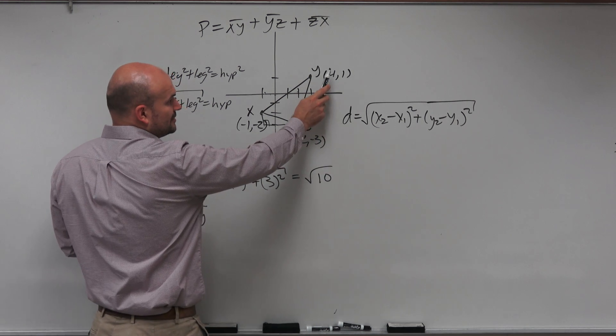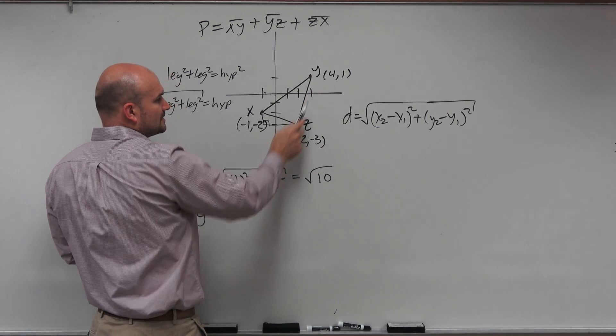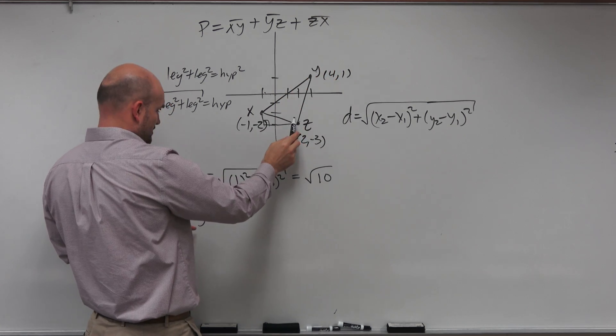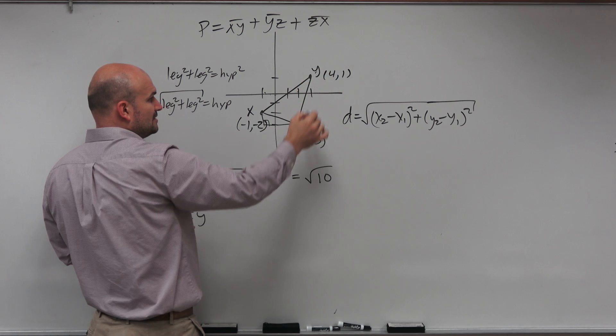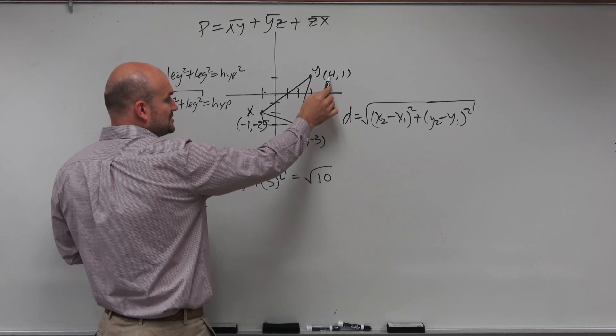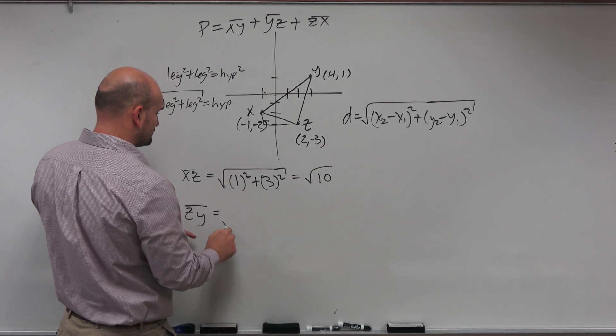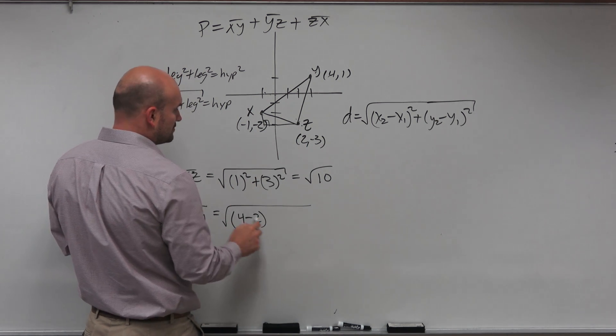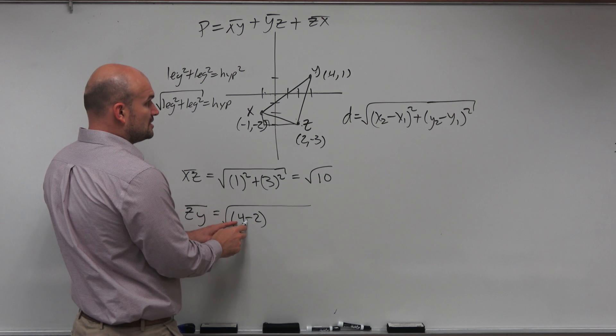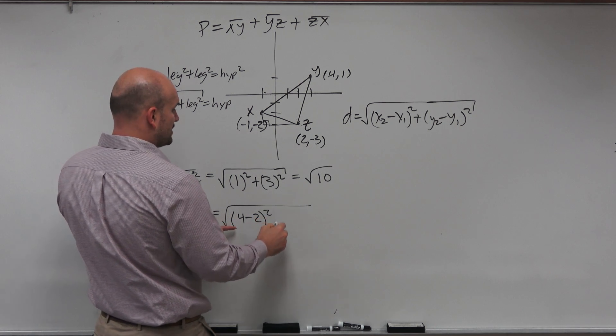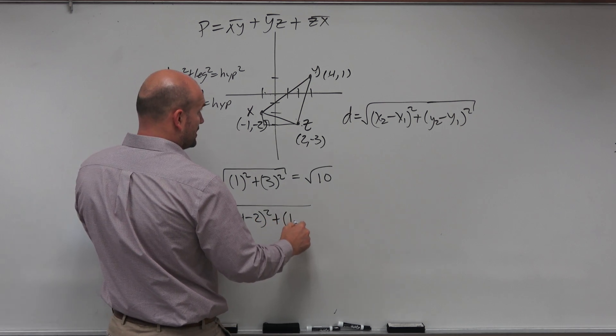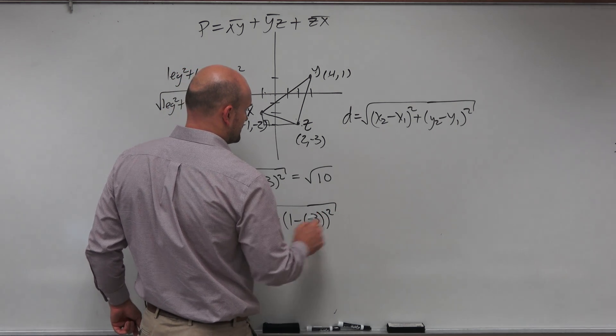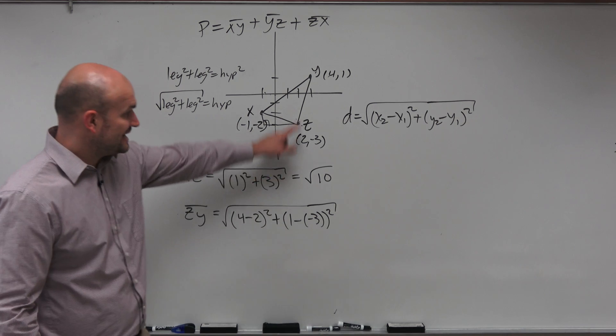So again, you're subtracting your, so if you're going to go from z to x, you subtract z to y. If you're going to go from z to y, you subtract here from there. So again, it's x2 minus x1. So I'll just write it out for this first one, and then I will do the same thing, but I'll do it quicker. So 4 minus 2, quantity squared, plus 1 minus a negative 3. Notice my use of parentheses. OK?